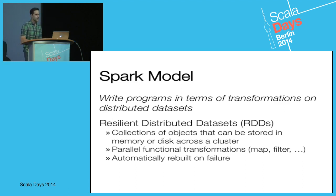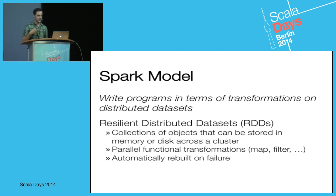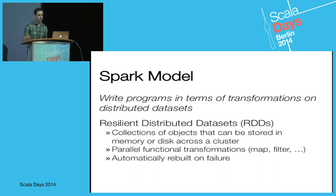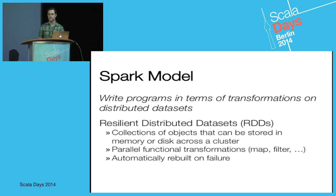When you write a Spark program, what you're really doing is describing transformations on distributed datasets. The core abstraction is what we call an RDD, or Resilient Distributed Dataset. An RDD is a collection of objects that can be stored in memory or on disk across a cluster. It's partitioned on all the nodes, and we co-locate the computation with the storage. You apply parallel functional transformations — things like map, filter, or reduce.